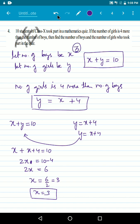Now, let us find the value of y. Let us substitute x is equal to 3 in this equation. Substitute x is equal to 3 in y is equal to x plus 4. So we have y is equal to 3 plus 4. It is equal to 7. So the number of girls is 7 and the number of boys is 3.